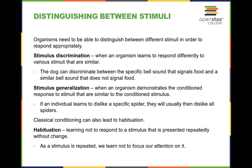Habituation is learning not to respond to a stimulus that is repeatedly present without change. As a stimulus is repeated, we learn to not focus our attention on it. It's similar to sensory adaptation, but different — with habituation we're referring to a stimulus that elicits a response, and we learn not to respond to it rather than just having an overall sensory adaptation to something.